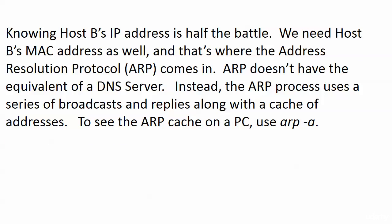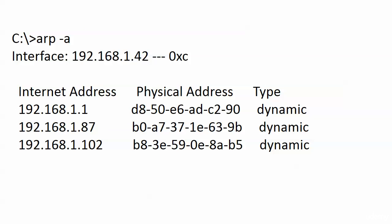Now knowing host B's IP address is half the battle — we need host B's MAC address as well. While we tend to concentrate on that layer 3 address, we've got to have a destination layer 2 address too. That's where the Address Resolution Protocol, ARP, comes in. ARP does not have the equivalent of a DNS server — you're not going to have a box on your network called an ARP server. The ARP process uses a series of broadcasts and replies along with a cache of addresses. That cache does cut down on the overall number of broadcasts. To see the ARP cache on a PC, just use arp -a.